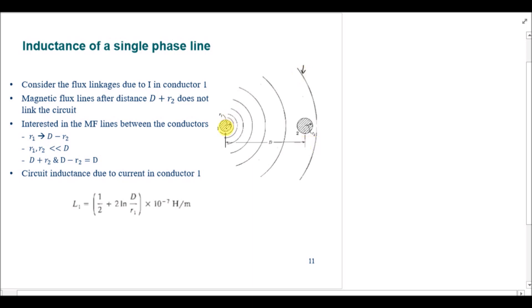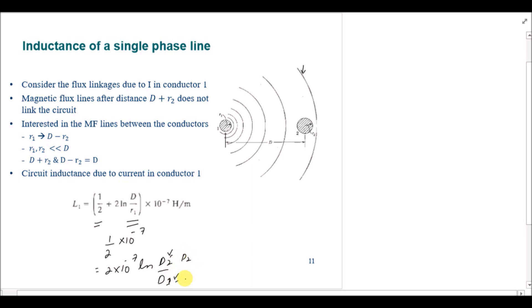To find the inductance due to current from conductor number one, there are two parts: one is due to the internal flux and the other is due to the external flux. The formula for the internal flux component is (1/2) × 10⁻⁷, and for the external component it is 2 × 10⁻⁷ × ln(d2/d1), where d2 and d1 are distances from points P2 and P1 respectively. This gives the total inductance in henry per meter per unit length.